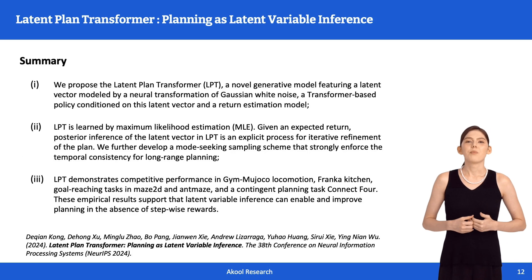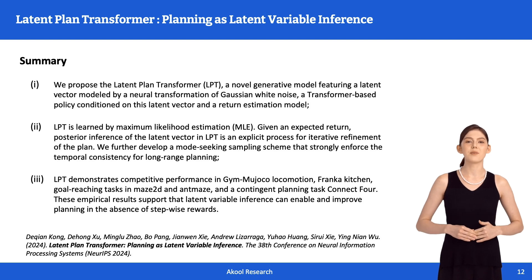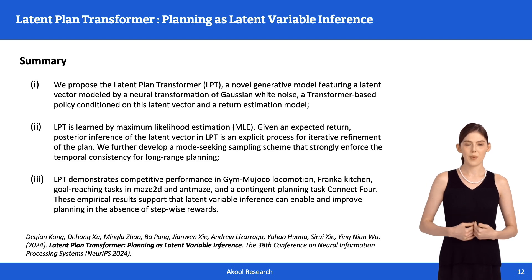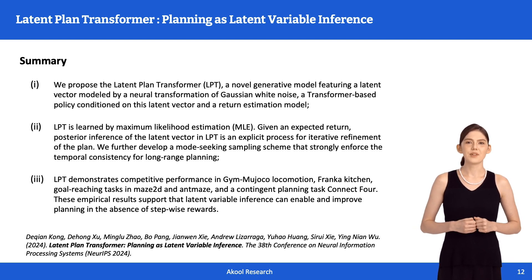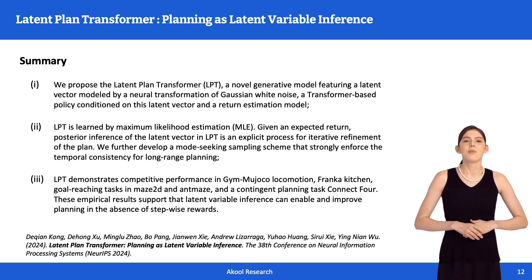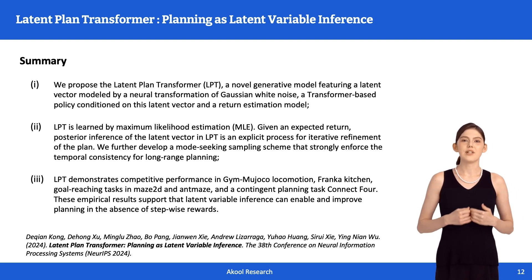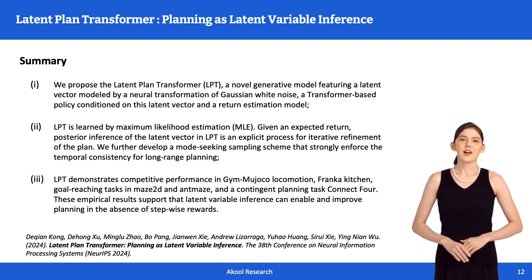In conclusion, we propose the Latent Plan Transformer, a novel generative model featuring a latent vector modeled by a neural transformation of Gaussian white noise, a transformer-based policy conditioned on this latent vector, and a return estimation model. LPT is learned by maximum likelihood estimation, and posterior inference of the latent vector provides richer information about the anticipated future. LPT demonstrates competitive performance in various tasks, including locomotion, Franca Kitchen, goal-reaching tasks in Maze2D and AntMaze, and a contingent planning task, Connect 4. These empirical results support that latent variable inference can enable and improve planning in the absence of stepwise rewards. Thank you for your attention!